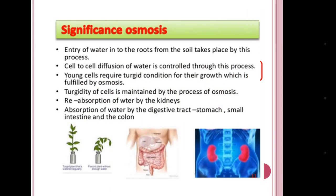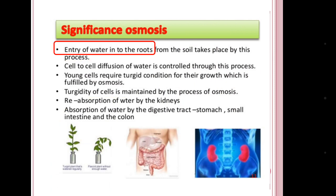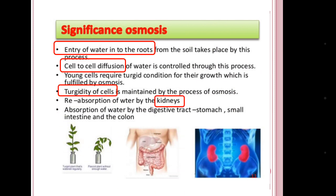So we can summarize the significance of osmosis as: entry of water, cell-to-cell diffusion or transportation, maintaining turgidity, water absorption in the kidneys, and intestinal absorption.